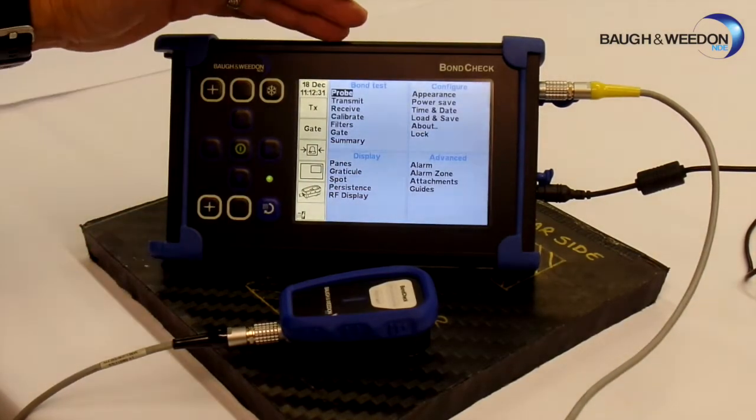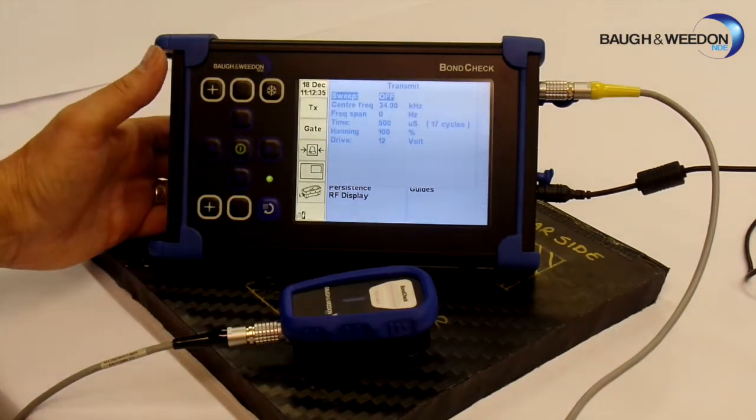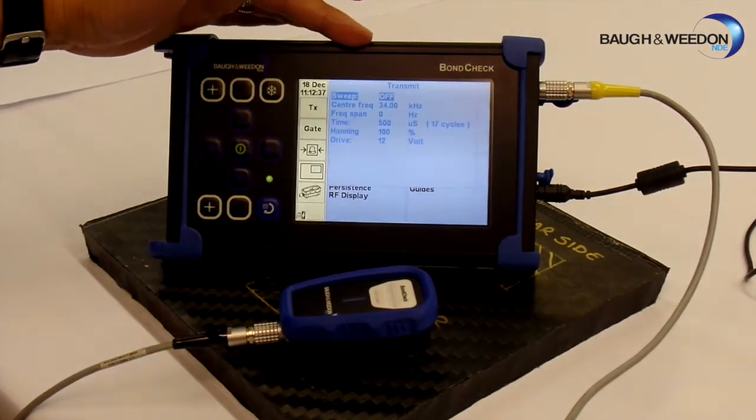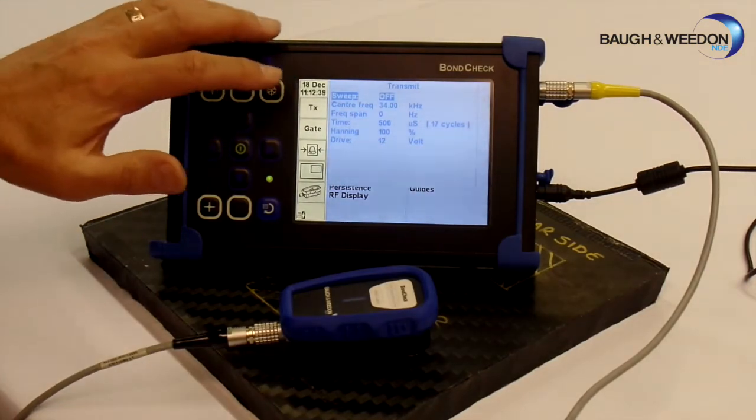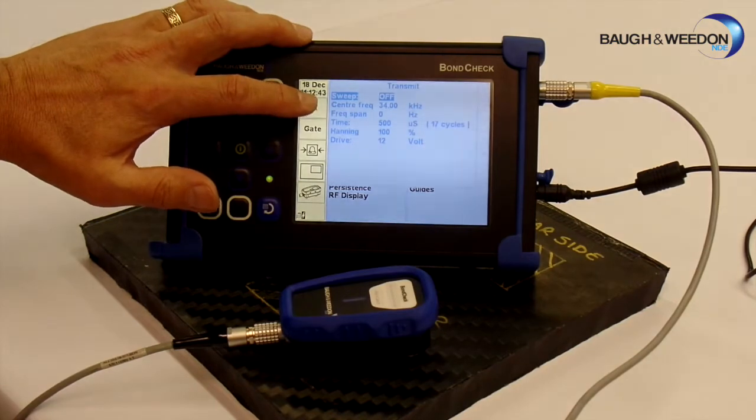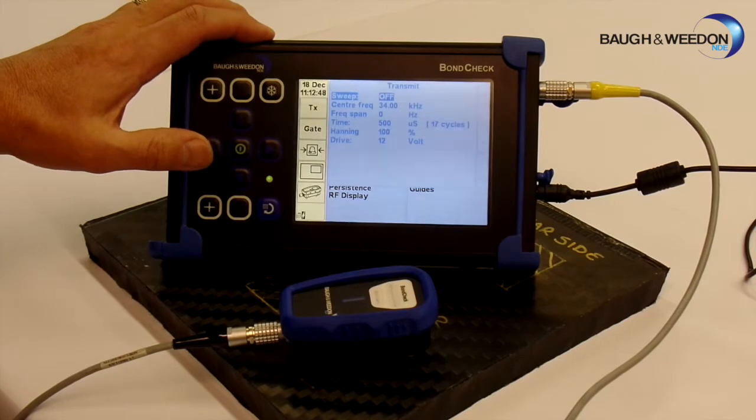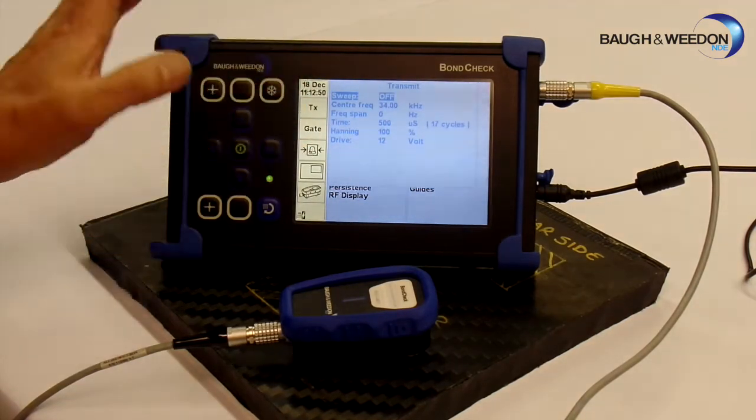We have been in probe, we are going to transmit next. Sweep is off, which is what we want for the calibration for the inspection. The center frequency of this probe is around about 34 kHz, that is correct. Everything else is okay.